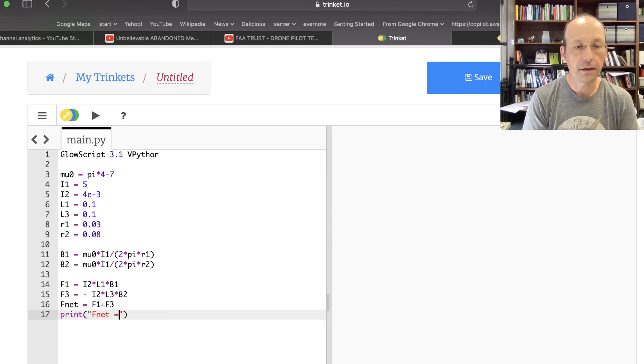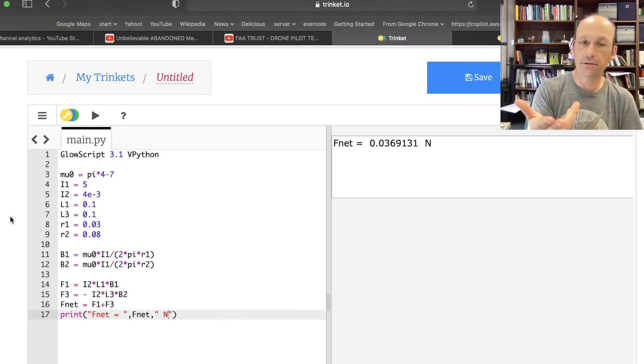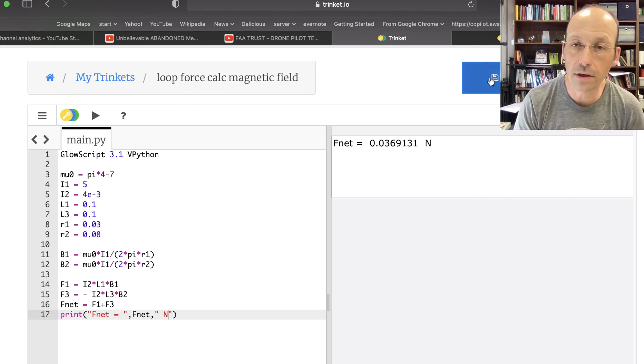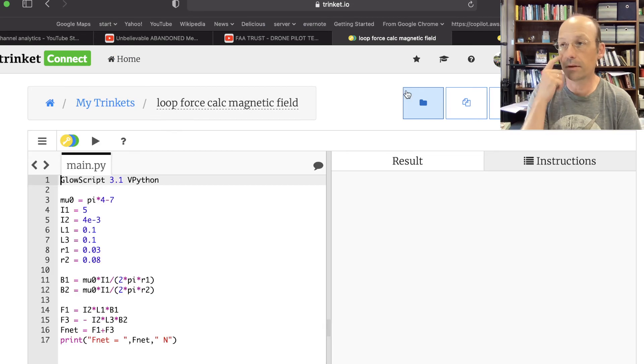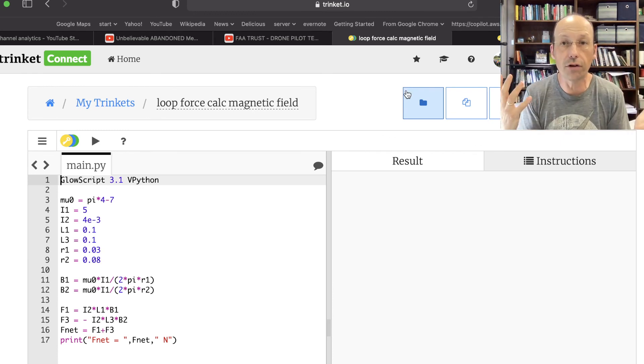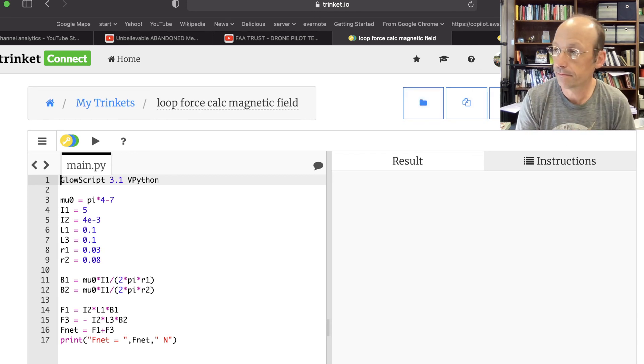Print F net equals F net newtons. Let's see if this works. There's your answer. And so what I really like about this is you can change the dimensions and stuff and it still works. I'll save it as loop force calc magnetic field, and I will give you the code. That's the solution to that problem. Not too bad. But again you really have to practice this visualization of three dimensions. It can seem overwhelming, but it's really not that hard. If you just practice.